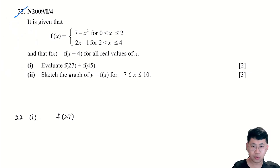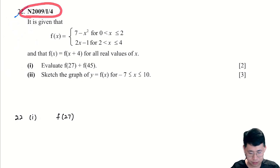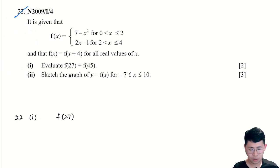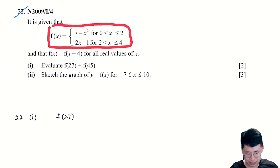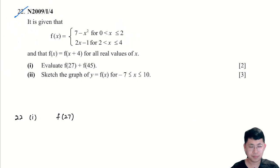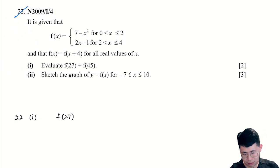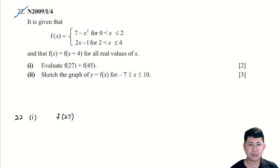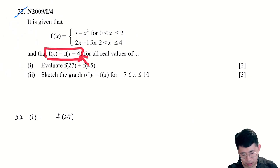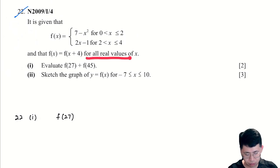We are currently in question 22, which is a past year question. In this question, you have a periodic function f(x) defined from 0 to 2 and 2 to 4, with two different rules. This is the piecewise function concept — the graph having two parts. And f(x) = f(x+4) is the concept of the periodic function, meaning we will repeat this with a period of 4 for all real values of x.